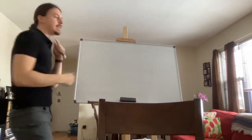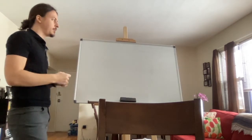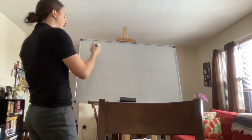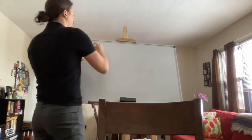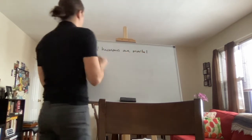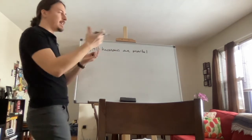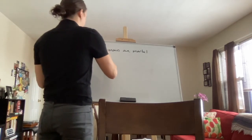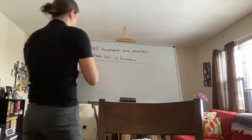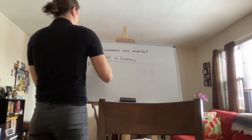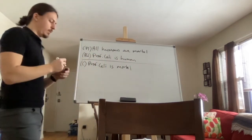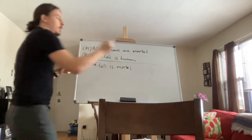Let's start with a deductive argument, since that's probably fresh in your mind. Take the basic example you'll always see in philosophy classes. Premise one: all humans are mortal. Premise two: Professor Lee — or Socrates, or any person you can think of — is human. And you conclude: therefore, I am mortal.